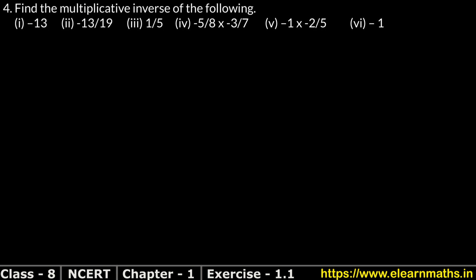Let's do question number 4 of exercise 1.1, that is rational numbers. We have to find the multiplicative inverse of the following. The multiplicative inverse means that if a value is 'a', then 1 upon a. So the numerator becomes the denominator and the denominator becomes the numerator.